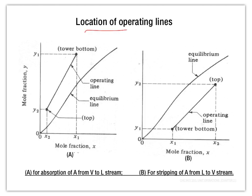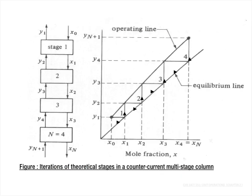The location of the operating line depends on the type of column. For an absorption column, the operating line lies above the equilibrium line. For a stripping column, the operating line lies below the equilibrium line. This is the graphical method used to calculate the number of trays or theoretical stages in the column.